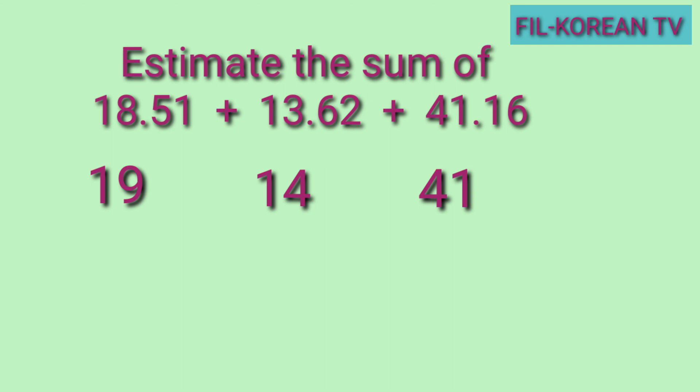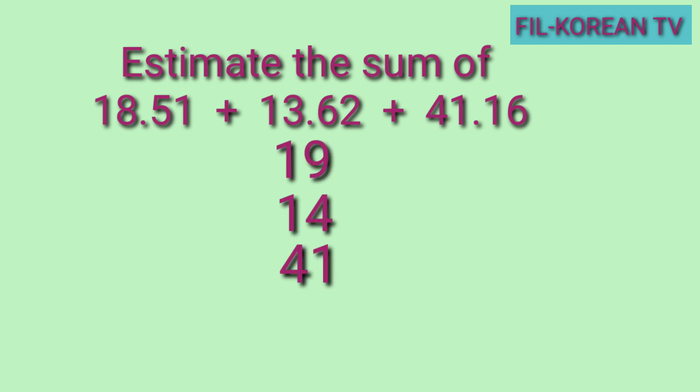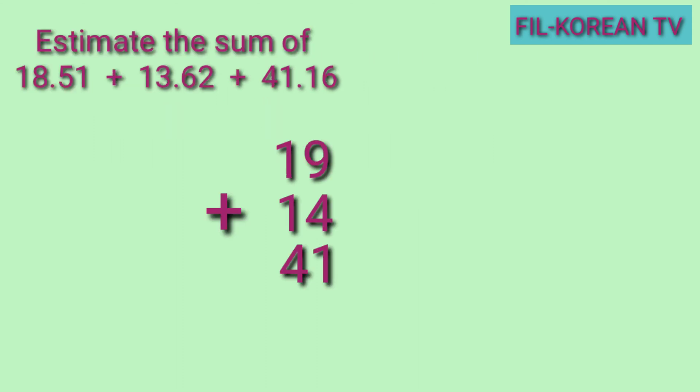Tapos na tayong mag-round off. Ngayon, i-add na natin ang numbers na ito: 19 plus 14 plus 41. Plus natin, simula kanan pakaliwa. 9 plus 4 plus 1 equals 14 — bring down 4, carry 1. Then, 1 plus 1 plus 1 plus 4 equals 7. Kaya yung estimated sum ay 74.